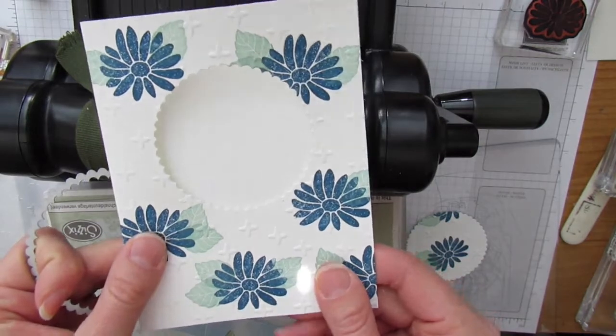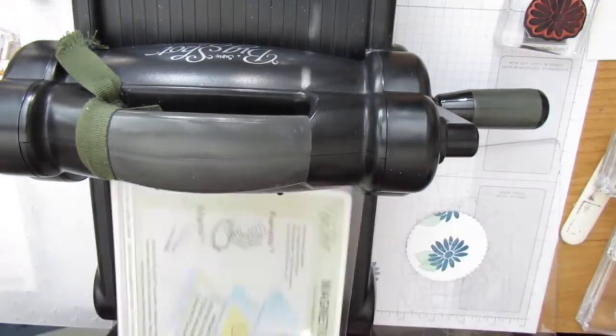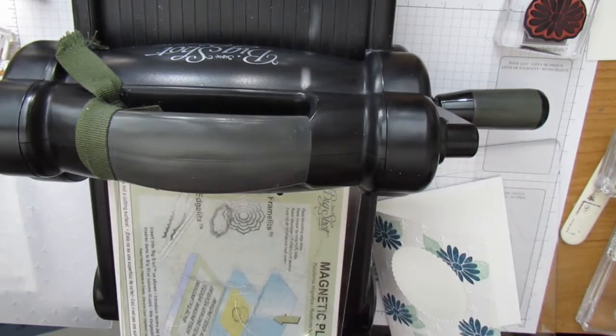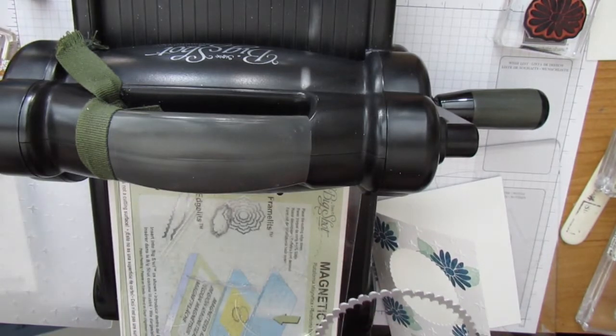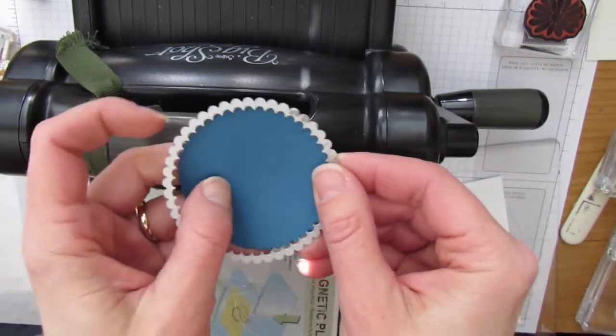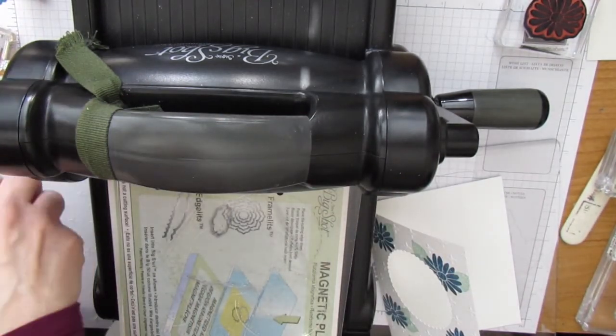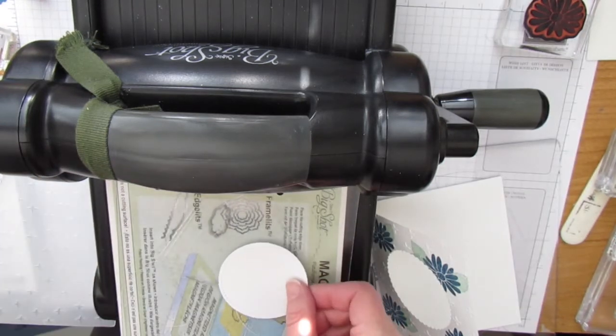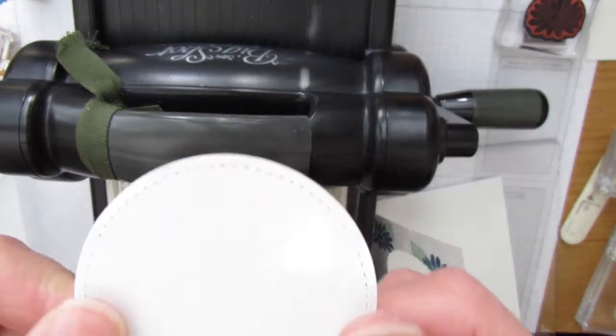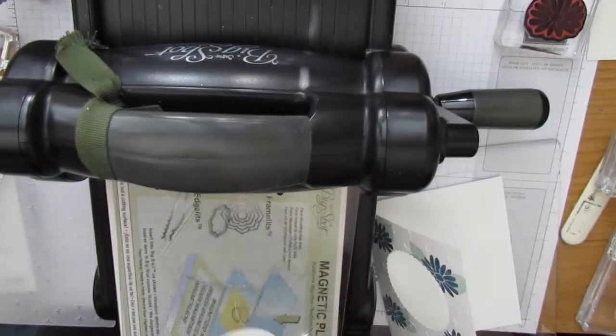So now it looks like this. Now the next thing I have to do, which I have already done, is using the same circle shape and dapper denim cardstock. I've already pre-cut one of these out for you. And then using the second largest stitched circle shape. Can you see that? Isn't that beautiful stitching? I've already cut that out as well.